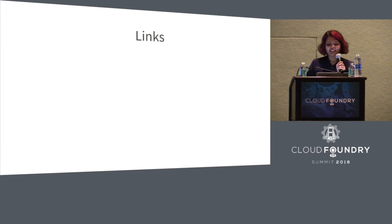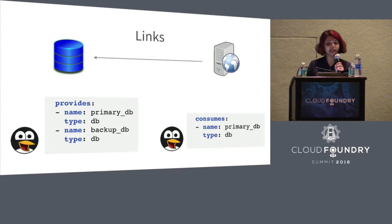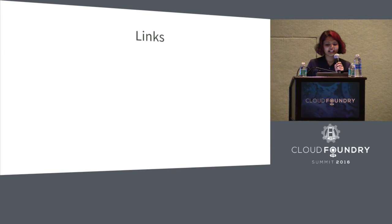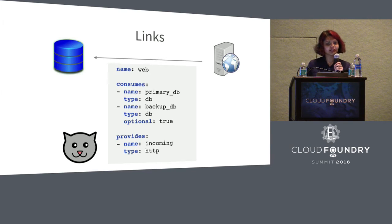Introducing Links. Links provides a way for release authors to very concisely state what you provide as a release and what you consume as a release. This makes the public API of a release very clear and you can now depend on other things without having to specify implementation details like exact IPs or exact properties. It also makes it really easy for the deployment operator because they can now only see what each job consumes and what each job provides, as opposed to specifying duplicate properties across each section and specifying particular IPs for each job.